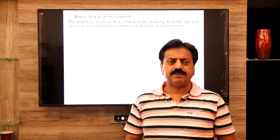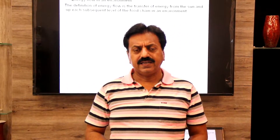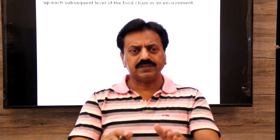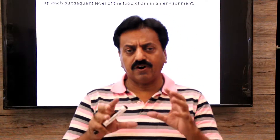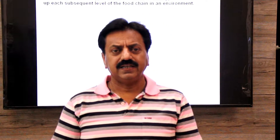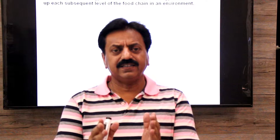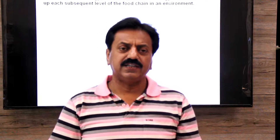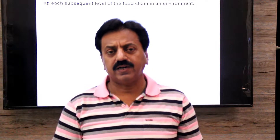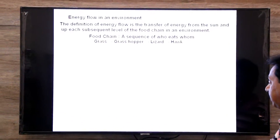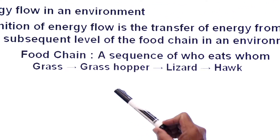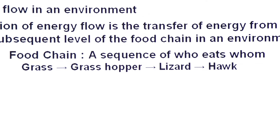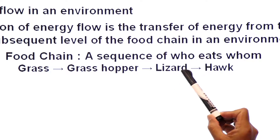This definition means that in any biological system, energy flows from the sun through the food chain. So now we have to define what is a food chain. A food chain is a sequence of who eats whom.